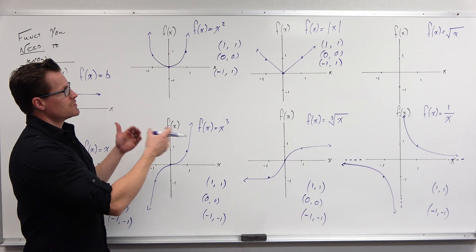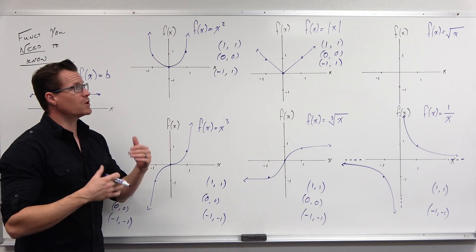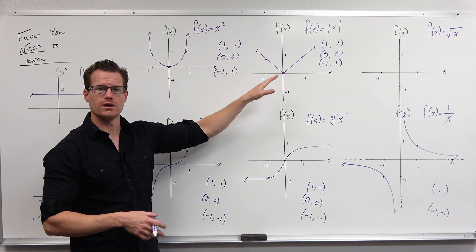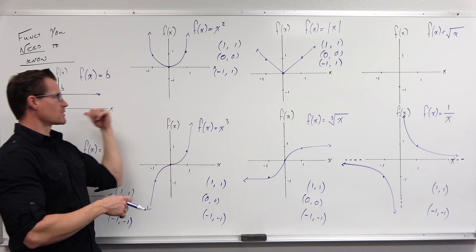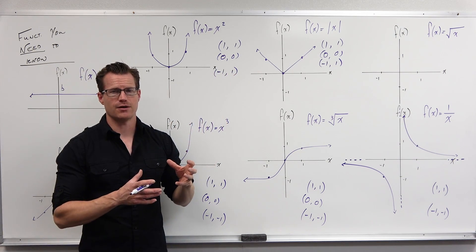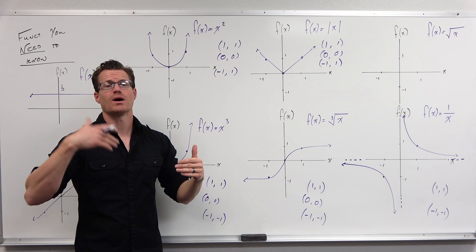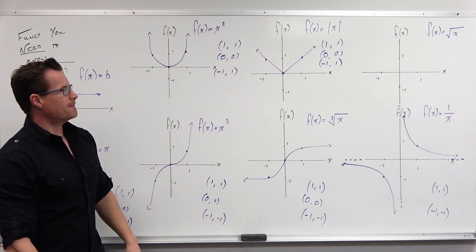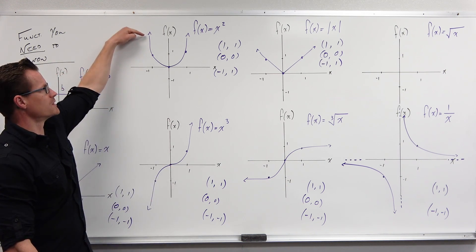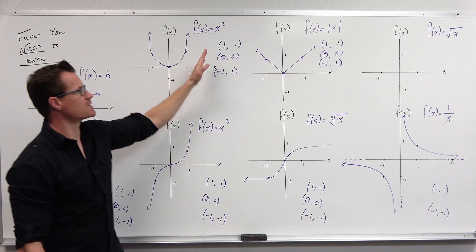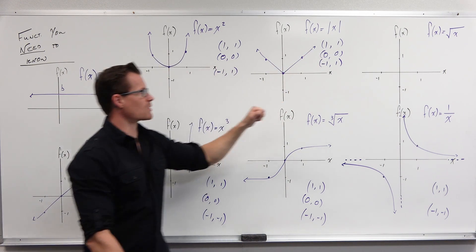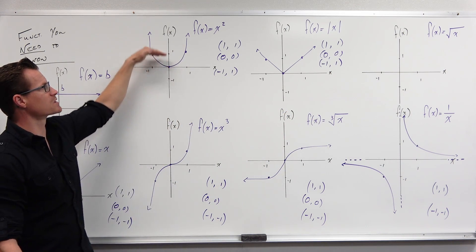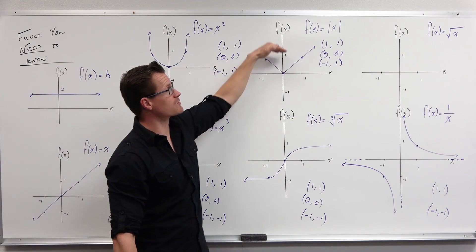Both of these even functions have key points (1,1), (0,0), and (-1, 1) — notice the negative one gives a positive one output for even functions. Every even basic graph shape, besides the constant, will have those key points. Also notice they're decreasing for negative x and then increasing after zero — a decreasing-then-increasing pattern. Domain is all real numbers for both. Range is just zero to positive infinity for both, since you can never get a negative output.